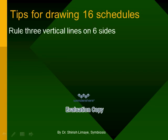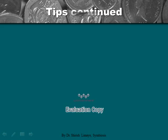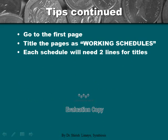To draw the schedules, rule three vertical lines on six sides of pages in your notebook — this is how the ruling will appear. This is the space in the margin. Go to the first page from where you have started ruling for solving the problem, and title these pages as Working Schedules. Each schedule will need two lines for writing titles. Now let us understand how many lines are to be left blank for each schedule.